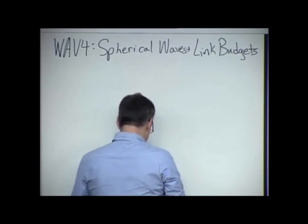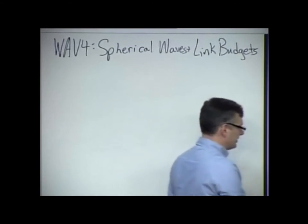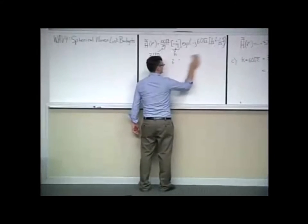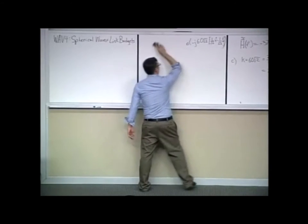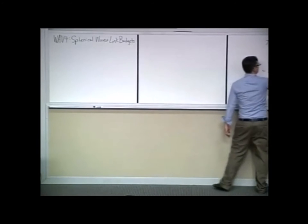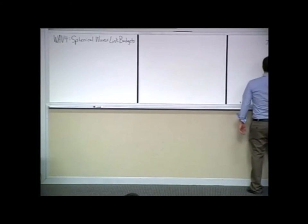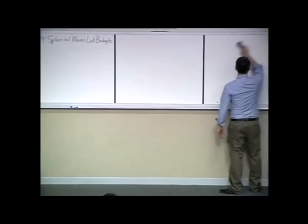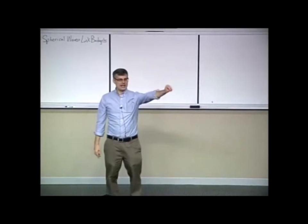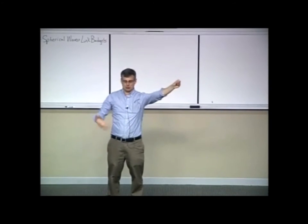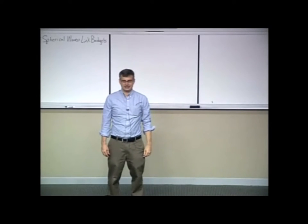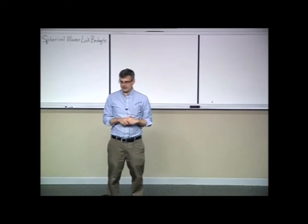Spherical waves, spawn waves, and link budgets. This is really the most practical way to track power in a radio system. Ultimately, what we're using our field theory and link budgets for is to figure out how much power gets from point A to point B in a radio link — in the case of satellite communications, from satellite to satellite, satellite to Earth station, or Earth station up to a satellite. Those are basically the physical scenarios where we're trying to track power.